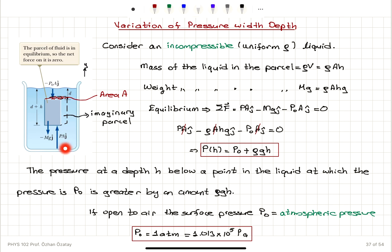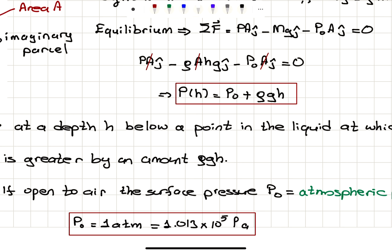As we go down in the liquid, the pressure increases with distance from the top surface: P equals P₀ plus rho·g·h. If the surface is open to air, the surface pressure P₀ can be atmospheric pressure. Atmospheric pressure has a value: one atmosphere equals 1.013 times 10⁵ pascals. This is an important value to know.